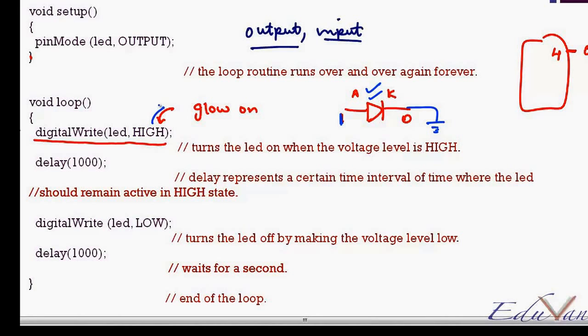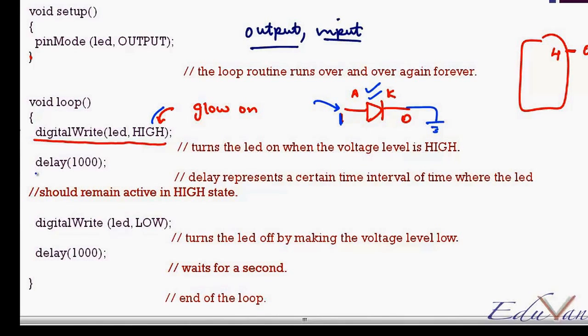Then I give the function delay. Delay is a function in Arduino. So when I say 1000, 1000 means this is in milliseconds. So 1000 milliseconds is equal to one second.